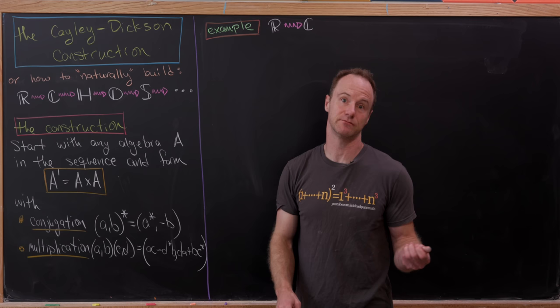So that's the Cayley-Dixon construction. There's a little tweak of the multiplication rule that forms the so-called split complex numbers, split quaternions, split octonions, and so on and so forth. Maybe post in the comments if you'd like a video about those — the split octonions are particularly interesting because they have a nice matrix representation. And if you haven't subscribed yet, consider subscribing. That's a good place to stop.